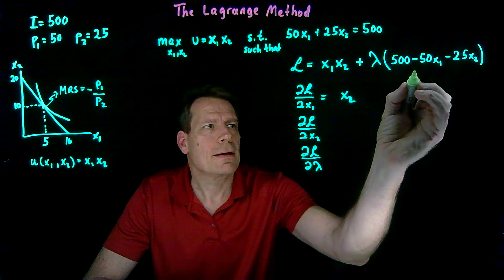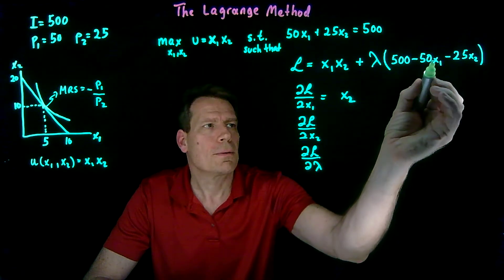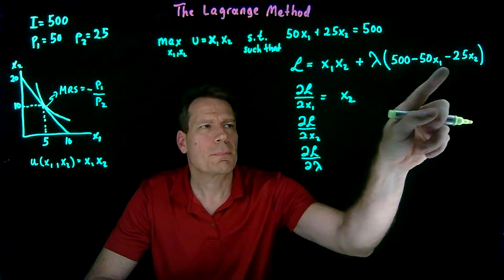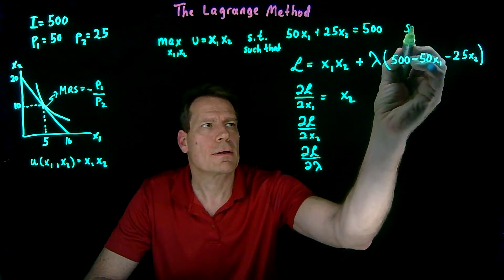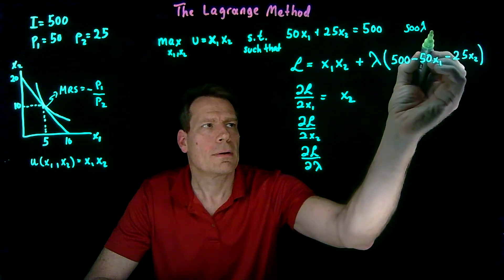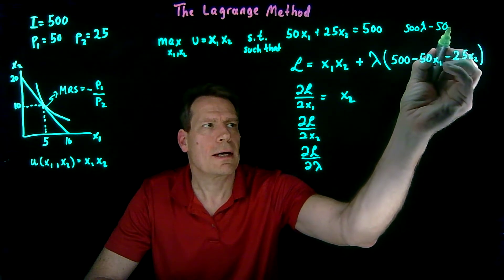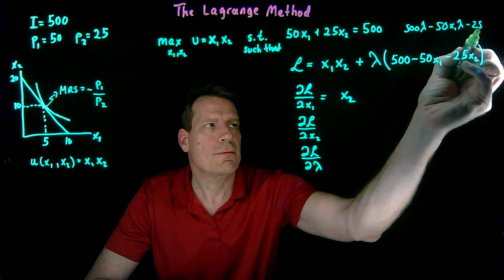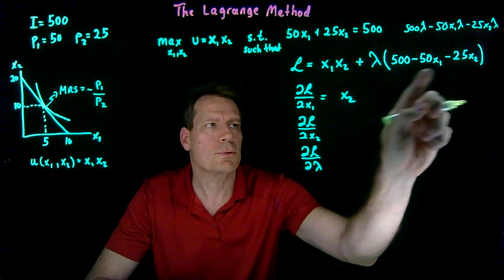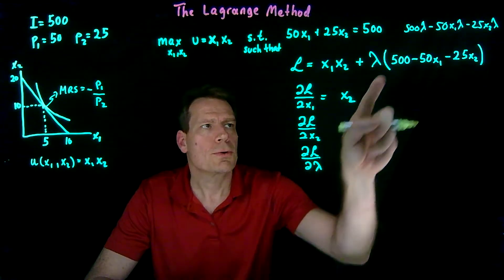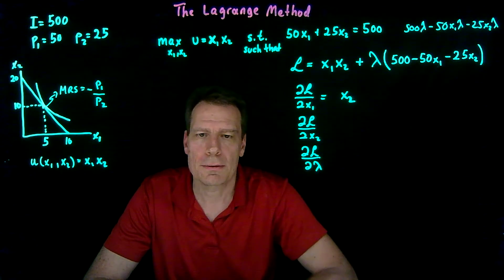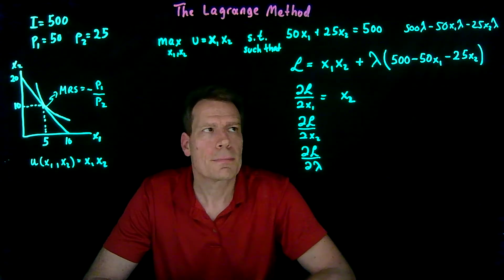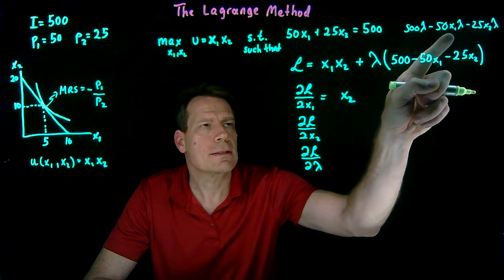Then we're going to get a second term, which comes from this term, because there is another x1. So if you multiply this out, you'd get 500 lambda minus 50 times x1 lambda minus 25 times x2 lambda. That's just multiplying this out. So you have two terms where there is no x1. So when we differentiate those, they just go away.